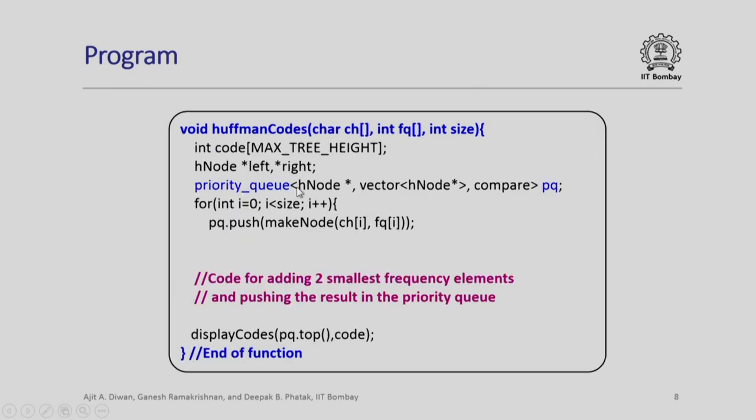Next, we come to the Huffman coding. Here, we have the code max tree height as we have defined already. Now, we define the H node. Priority queue is the element that we use from the STL library.